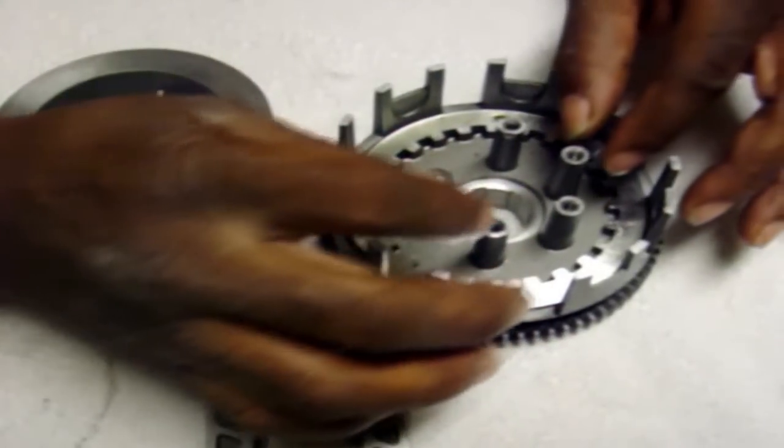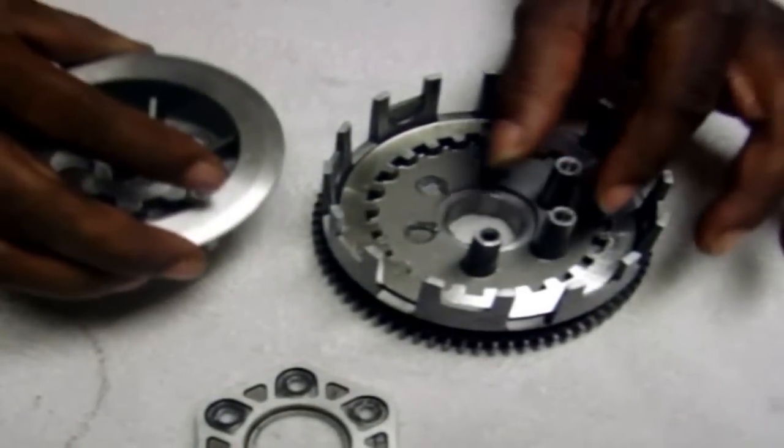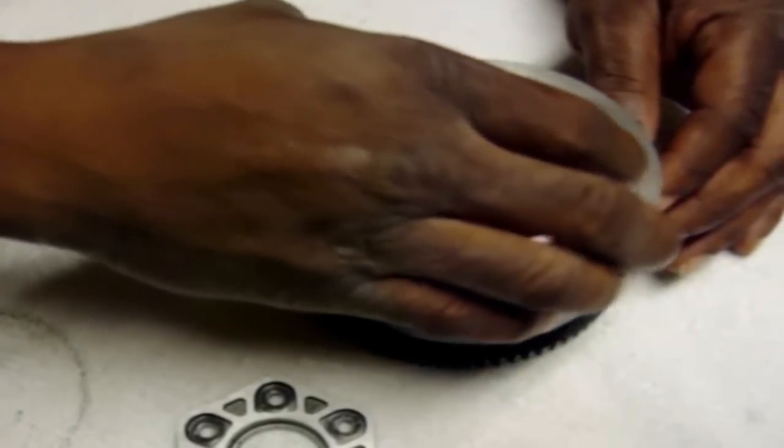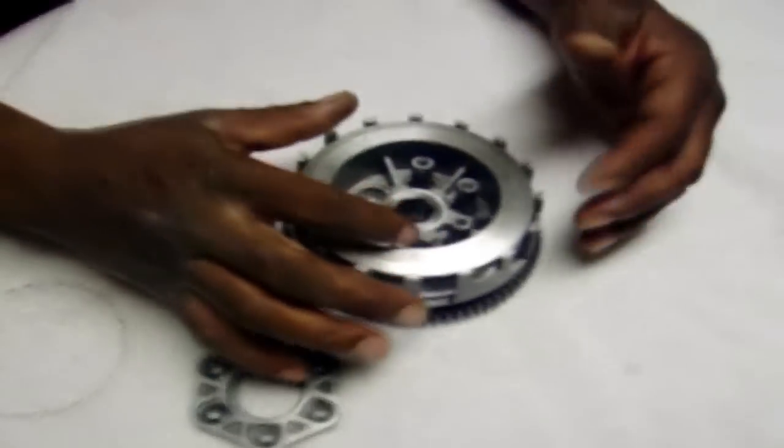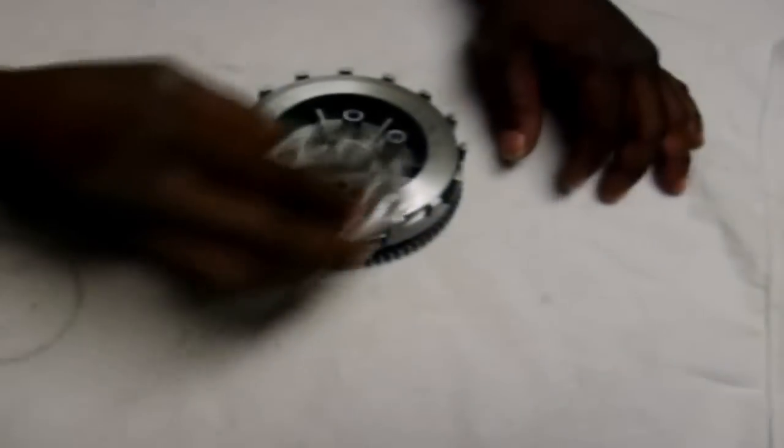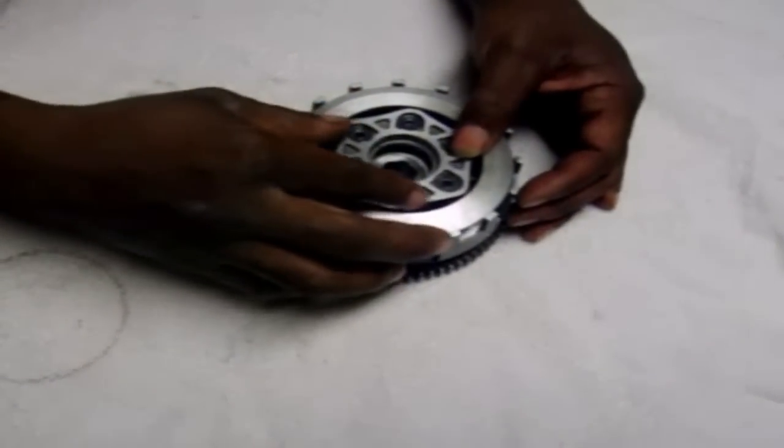Then this basket is supposed to go over top just like that. Then this goes in right here, and then the springs go in. I have brand new springs; the clutch came with brand new springs. Then this is screwed down onto it.